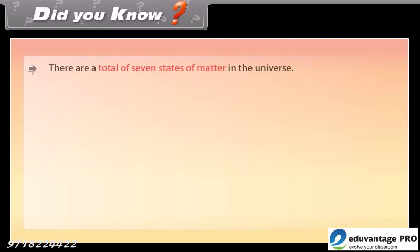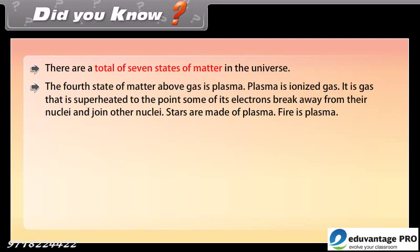Did you know, there are a total of seven states of matter in the universe. The fourth state of matter above gas is plasma. Plasma is ionized gas. It is gas that is superheated to the point some of its electrons break away from their nuclei and join other nuclei. Stars are made of plasma.